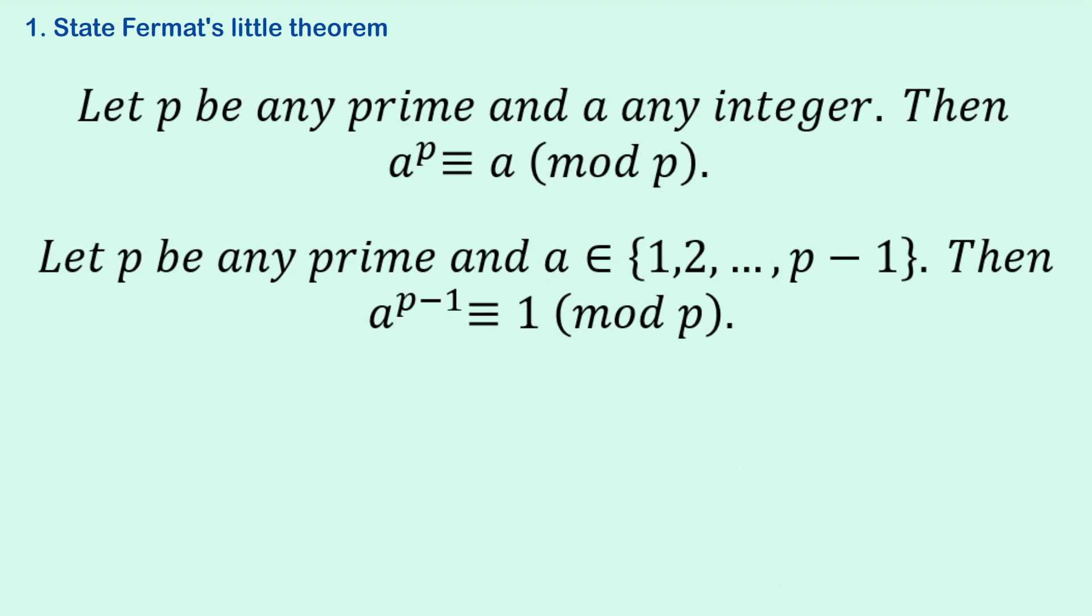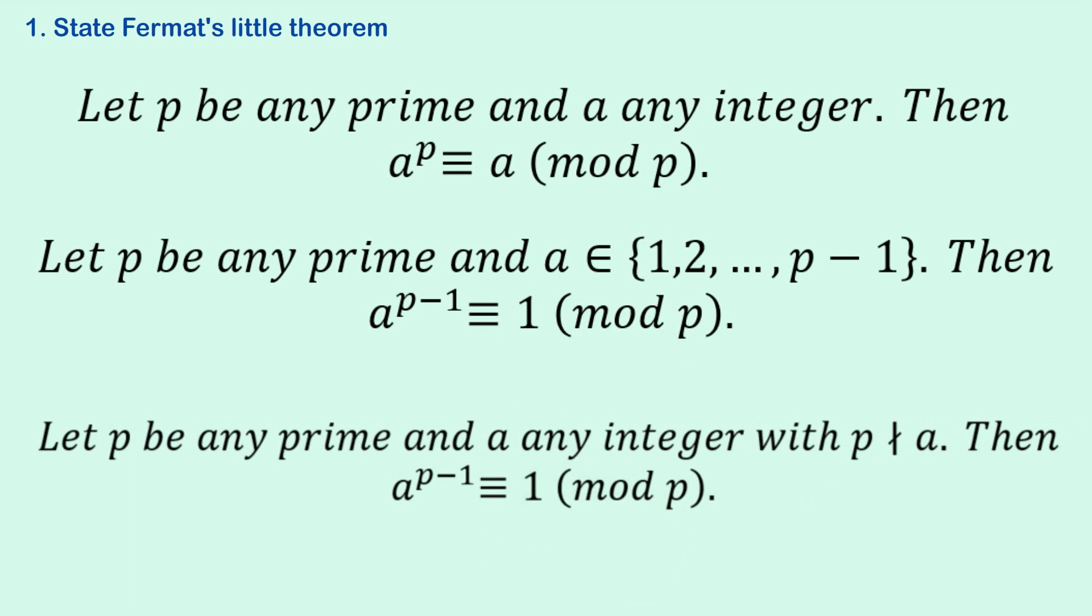And the final one that you might see is this. Let p be any prime and a an integer with p not dividing a. Then a to the p minus 1 is congruent to 1 mod p.